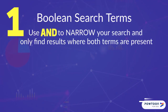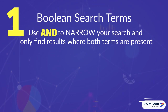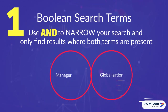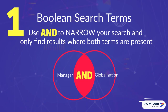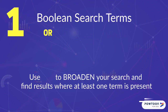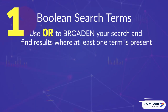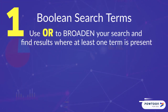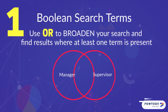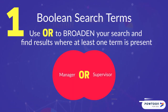Use AND to narrow your search and to only find results where both terms are present. For example, manager AND globalization. Use OR to broaden your search and to find results where at least one term is present. For example, manager OR supervisor.